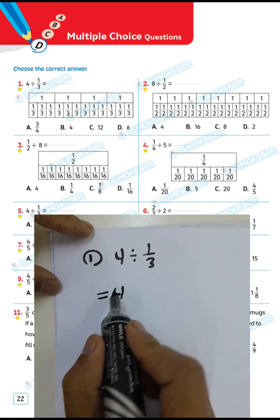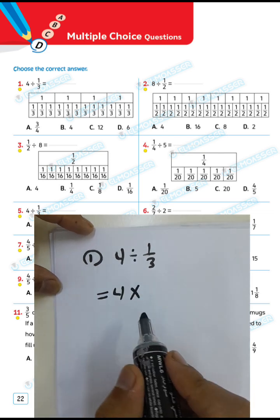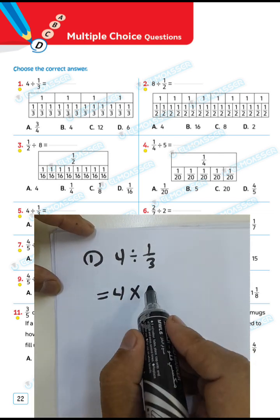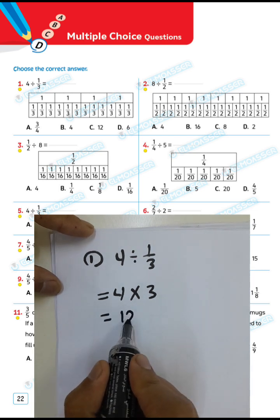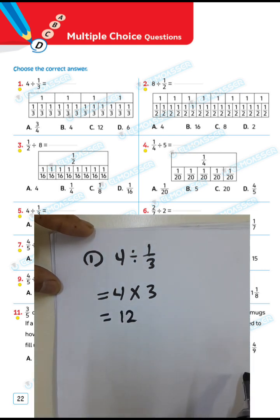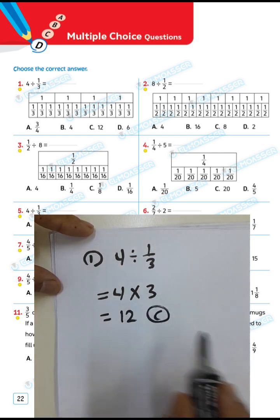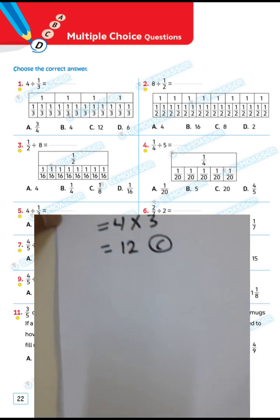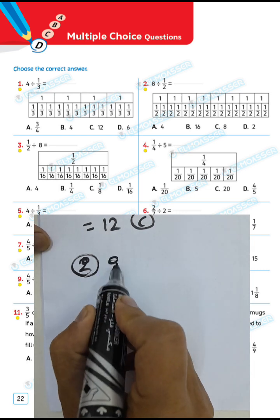We can solve this example by writing 4 and converting from division to multiplication, then writing the inverse of 1/3, which is 3 over 1. So 3 times 4 equals 12. The result will be letter C: 12.